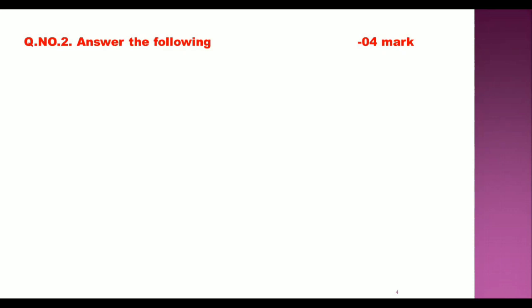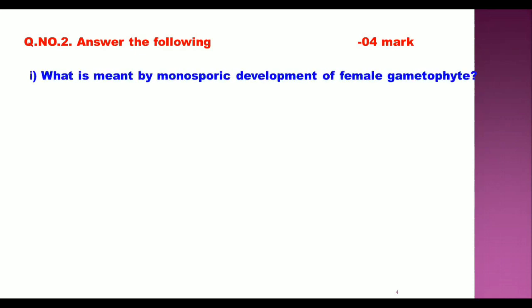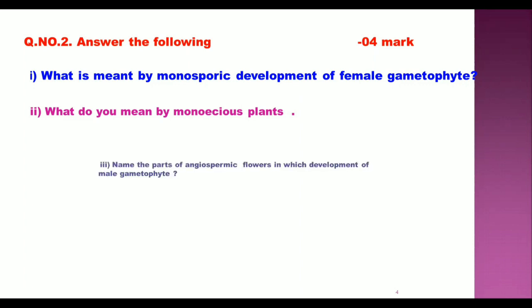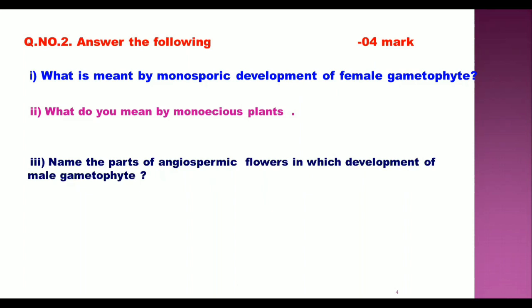Answer the following questions: What is meant by monosporic development of the female gametophyte? What do you mean by a monoecious plant? Name the parts of an angiosperm flower in which development of the male gametophyte takes place.